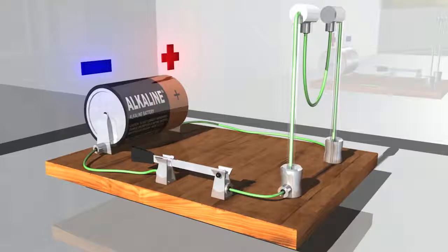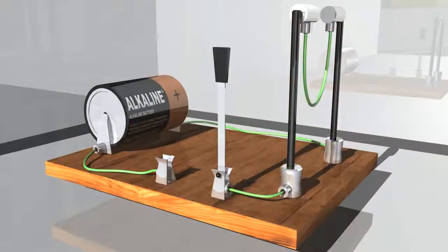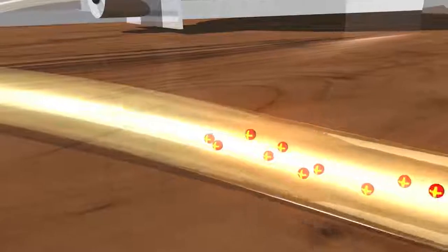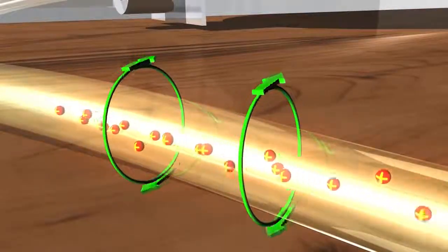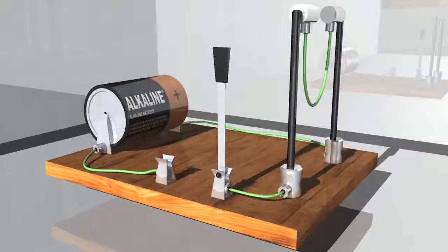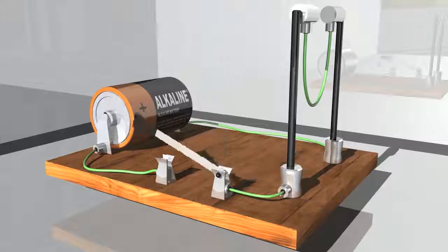If it's not moving, a charged particle doesn't create any magnetic field. But when it moves, it generates a little magnetic field around it, shown by these green arrows. Flip the direction of the current and you flip the direction in which the magnetic field circles around it.